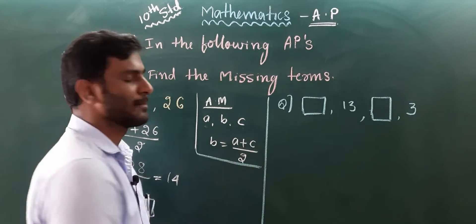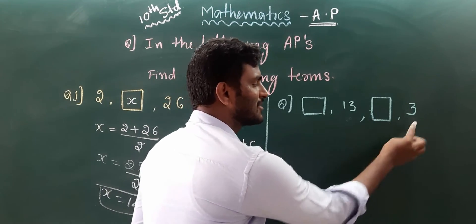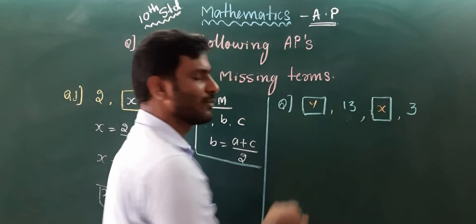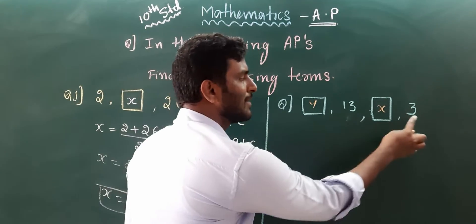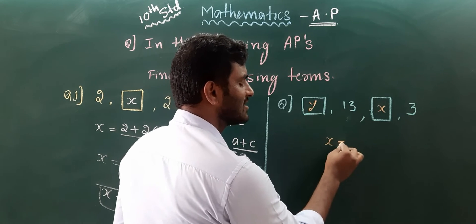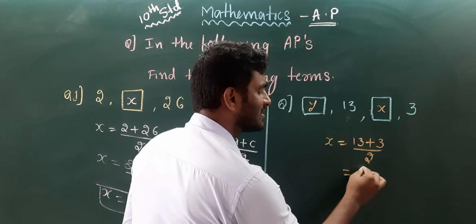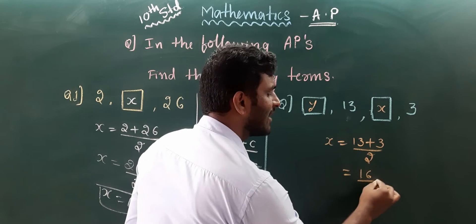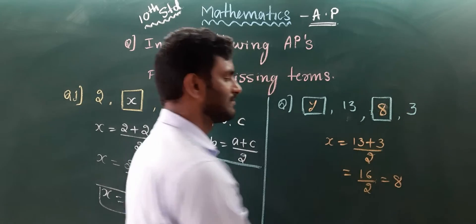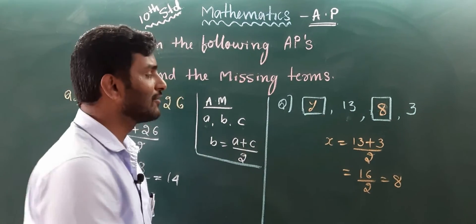Let x be the first missing term and y be the third missing term. Using the arithmetic mean concept, x equals the sum of the second and fourth terms divided by 2, that is 13 plus 3 divided by 2, which gives 16 divided by 2, so x equals 8.